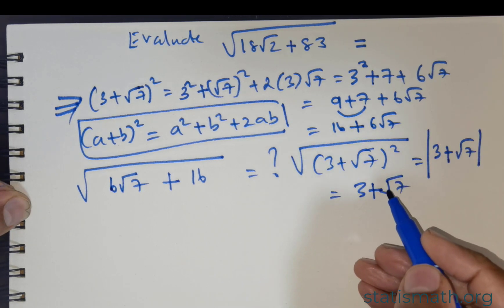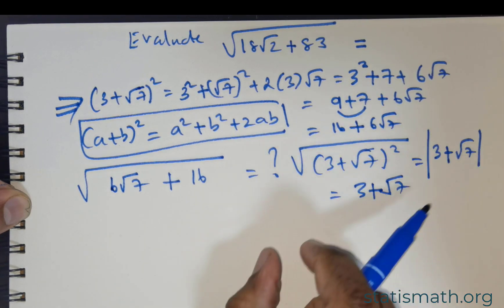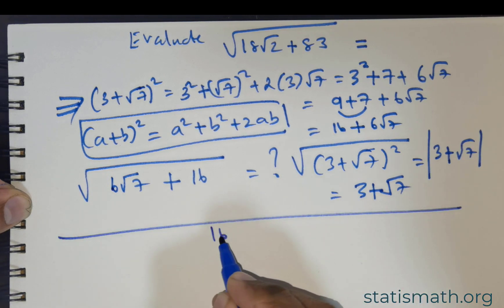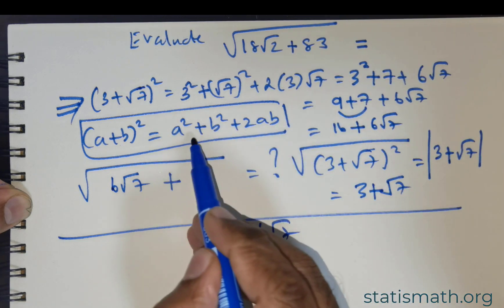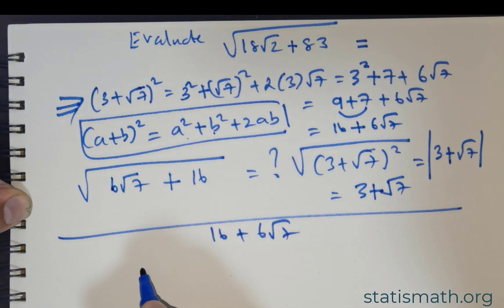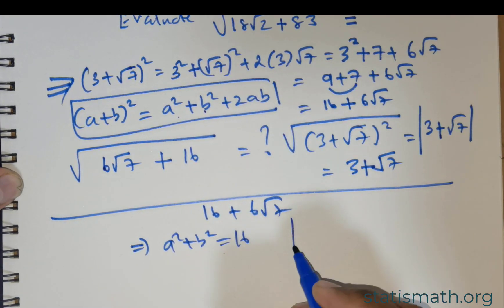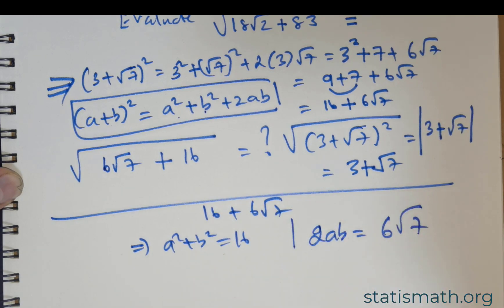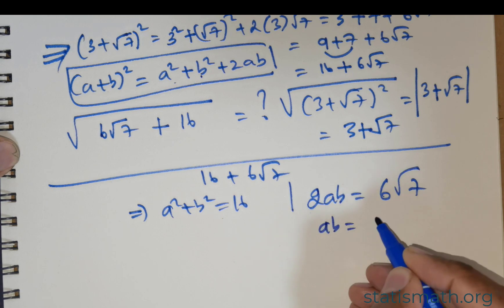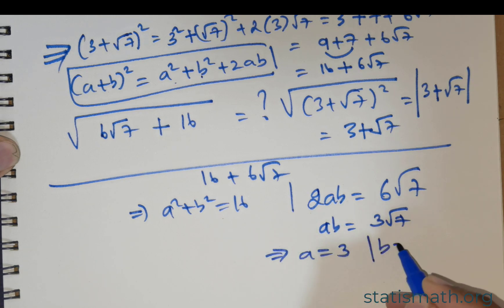From here there are a few observations to make. Considering 16 + 6√7: clearly 16 was produced by a² + b², meaning a² + b² produced 16. And 2ab produced 6√7. So from here I can write ab = 3√7.